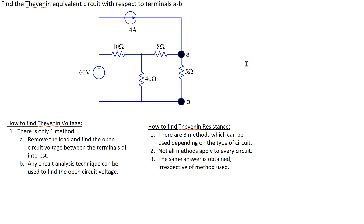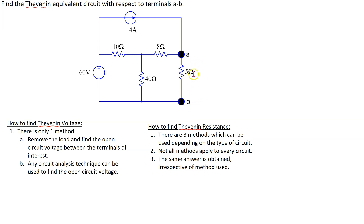In this video we will look at how to find the Thevenin equivalent of a circuit containing independent sources only. This is the given circuit of interest which has an independent voltage source and an independent current source. This is the 5 ohm load resistor connected between the terminals of interest A and B.